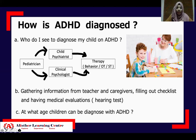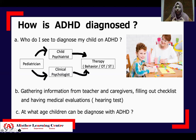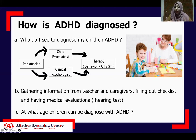The characteristics have to be consistent across settings — at school, at home, in a shopping mall, or at grandmother's house. For example, if the child is disruptive in school and disturbing classmates, at home they will also be disruptive and disturb their siblings.